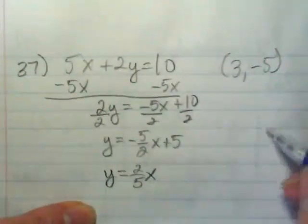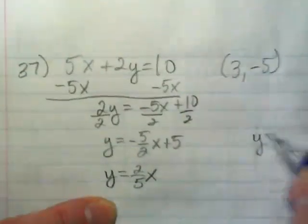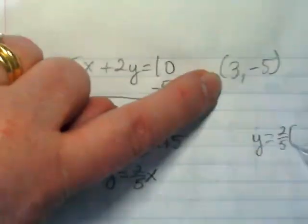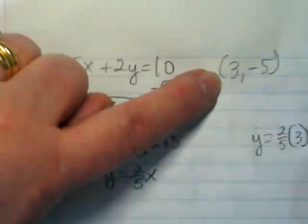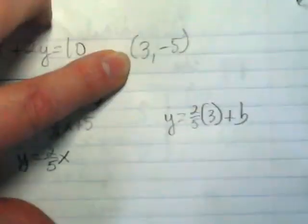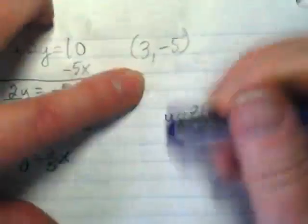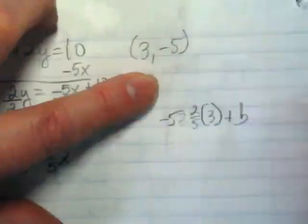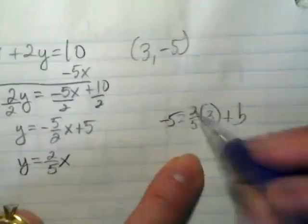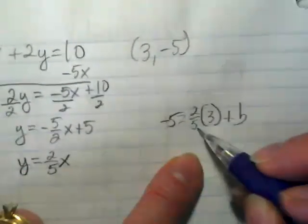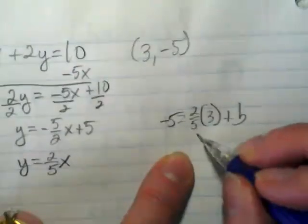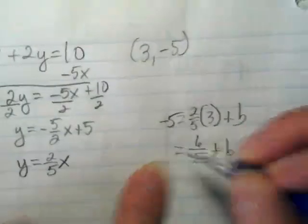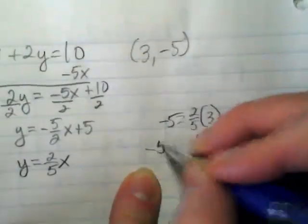And I'm going to do in this workspace over here, y is equal to 2 fifths x. Well, my x is 3, I'm trying to find the plus b, and I'm going to change the y to be the y from the ordered pair, which is negative 5. 2 times 3 is 6, and 6 divided by 5 is going to just be 6 over 5 plus b equals negative 5.